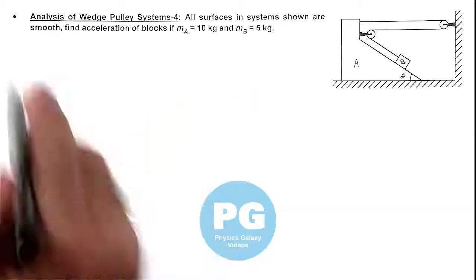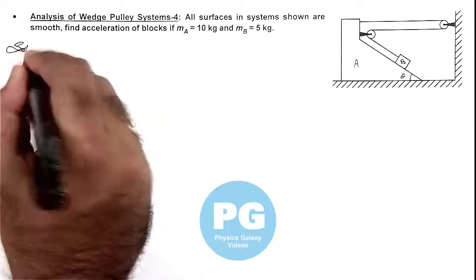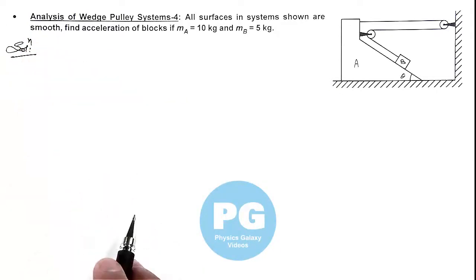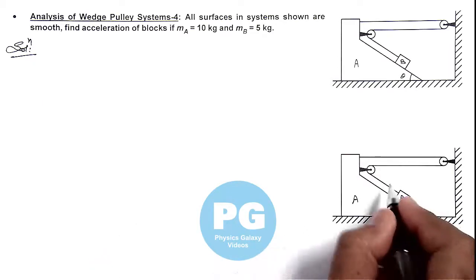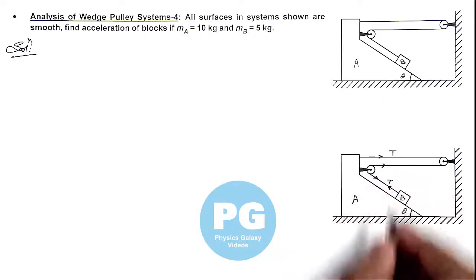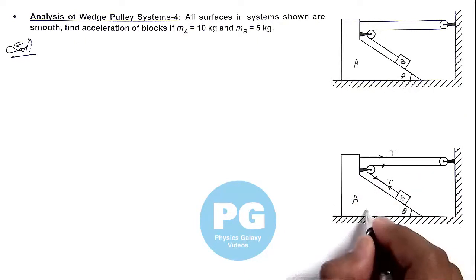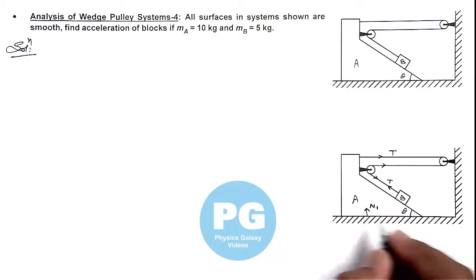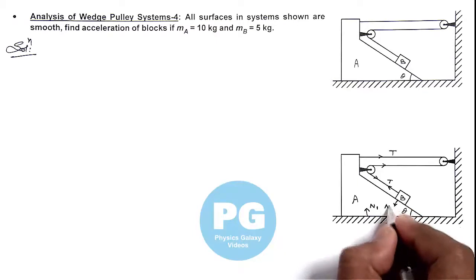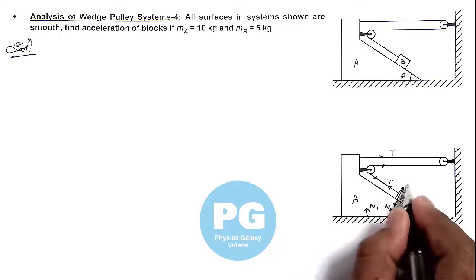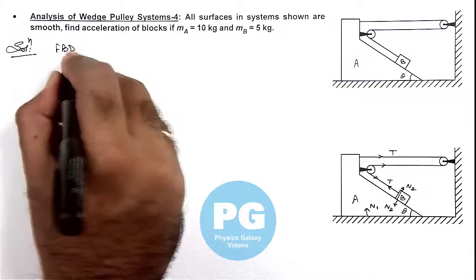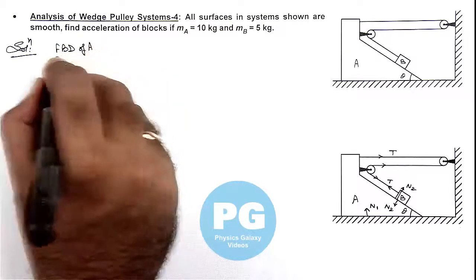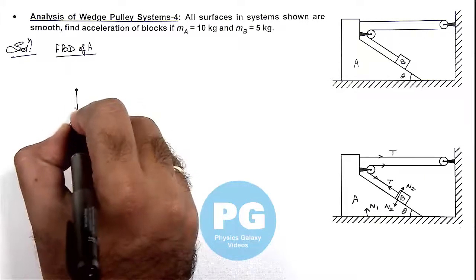We can analyze the accelerations first and draw free body diagrams as we are doing in other illustrations. So here you can see in this figure, we distribute the tension. This is a single string, so everywhere the tension in string will be common, and it'll experience normal reactions.